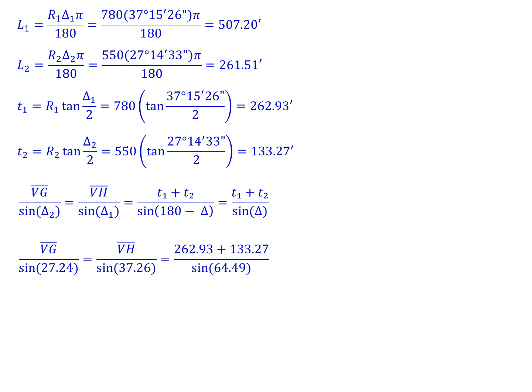We're dividing each of those by the sine of their deltas, and that equals adding up t1 and t2 divided by the sine of that overall delta.